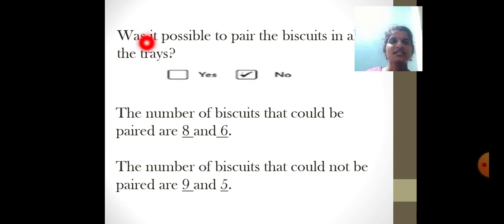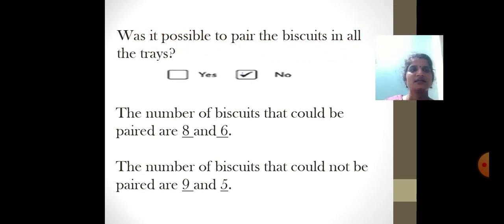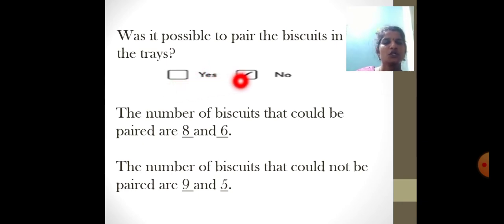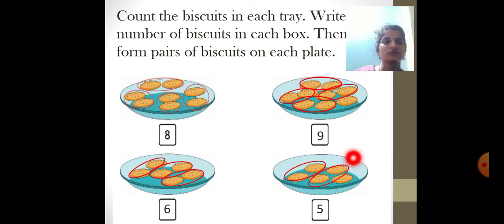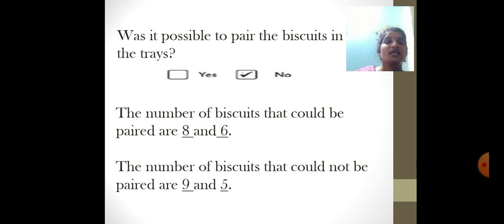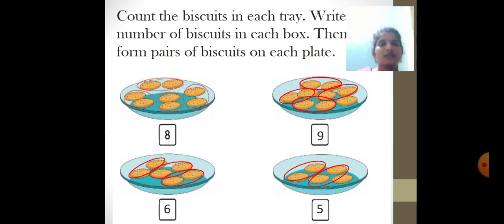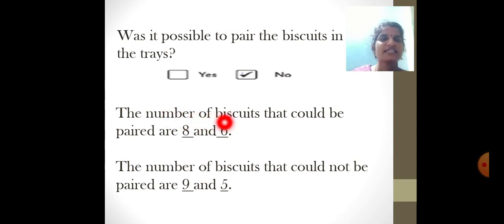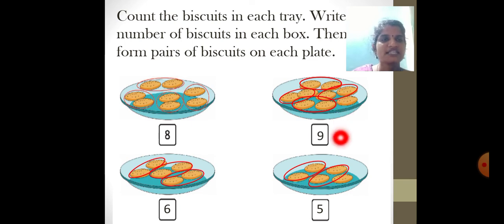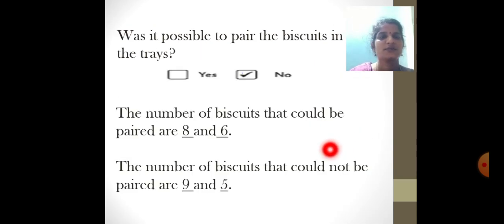Was it possible to pair the biscuits in all the trays? No. The number of biscuits that could be paired are 8 and 6 — no biscuits are left over in those trays. The number of biscuits that could not be paired are 9 and 5 — one biscuit is left over in each of those trays.